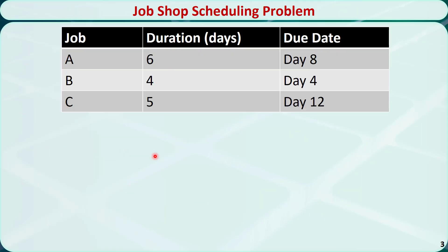Now let's check this example. Three jobs A, B, and C must be processed on a single machine. The time required to process jobs A, B, and C are 6 days, 4 days, and 5 days, respectively. The due dates of jobs A, B, and C are on day 8, day 4, and day 12, respectively.